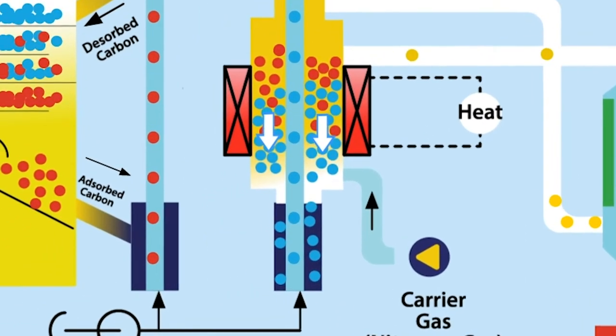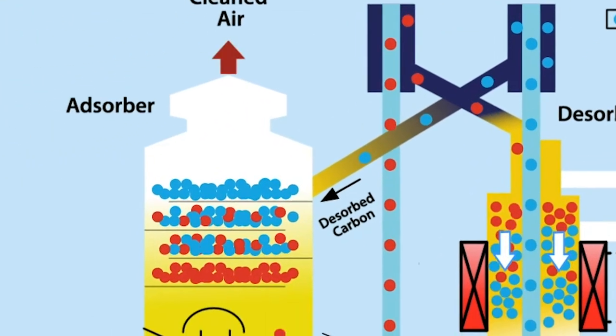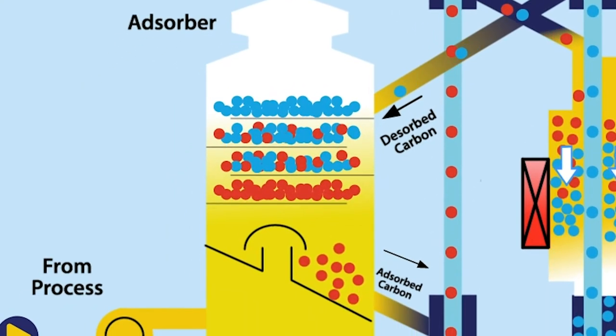The carbon moves to the bottom of the desorber and is conveyed pneumatically back to the adsorber where it is reused again to adsorb the emissions.